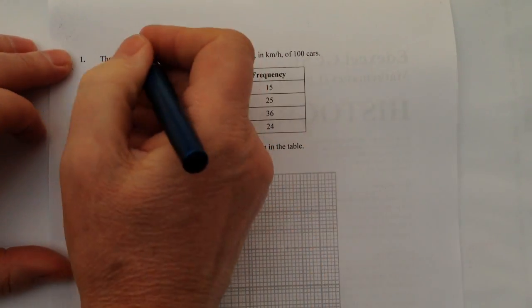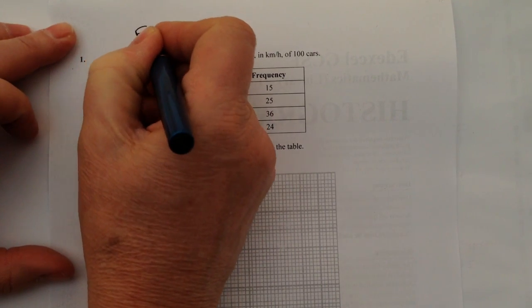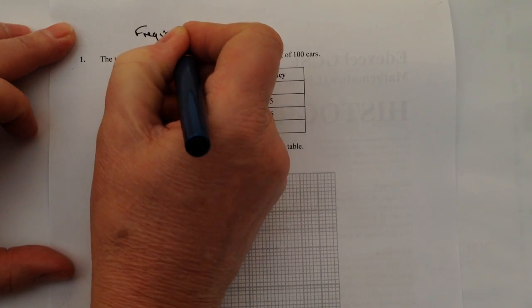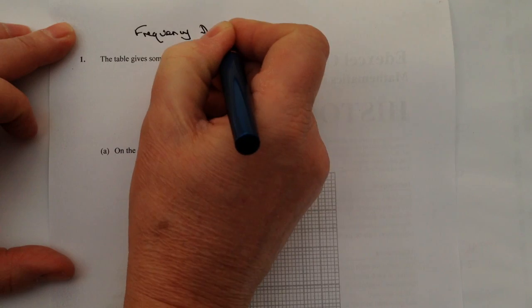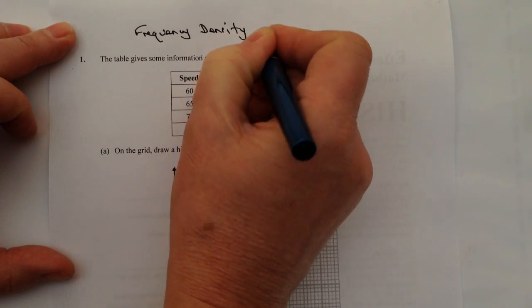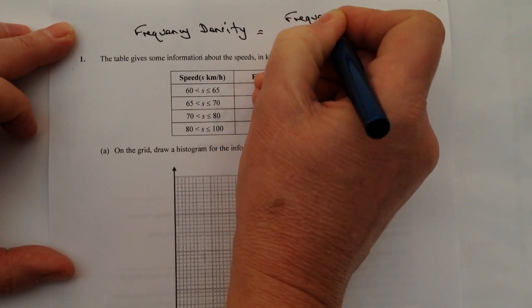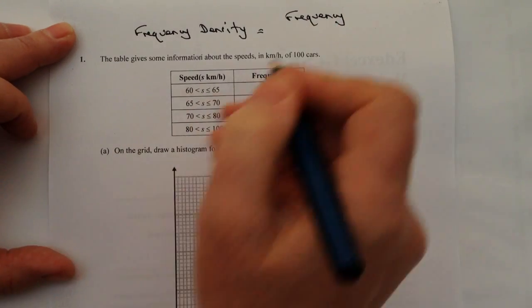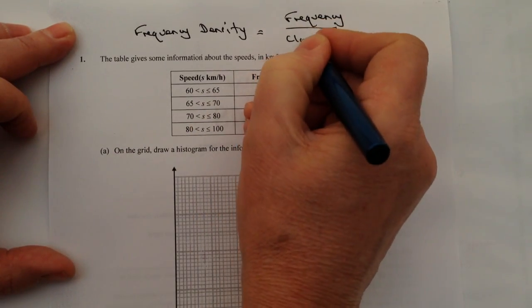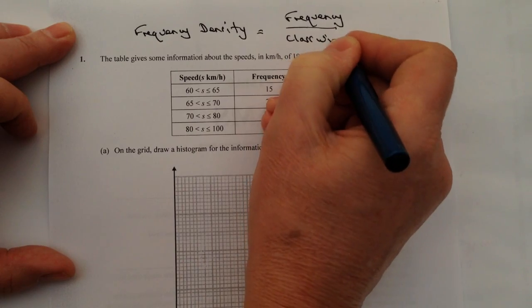write at the very top the formula that you need to remember, which is frequency density equals frequency divided by class width. And if you can't remember this formula, it's going to really help you always with working through these types of questions...